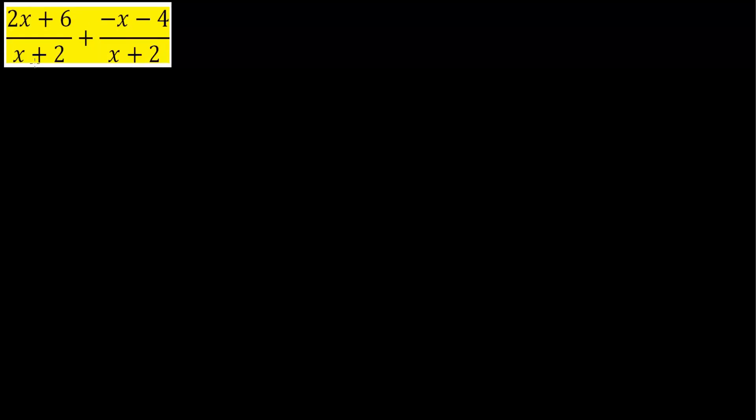If you notice we have a common denominator of x plus 2. For problems like these where we have a common denominator you simply need to add the numerators up. So you would get 2x plus 6 minus x minus 4, simply combining the numerator divided by our common denominator of x plus 2.